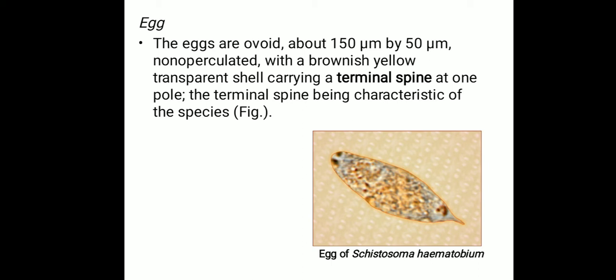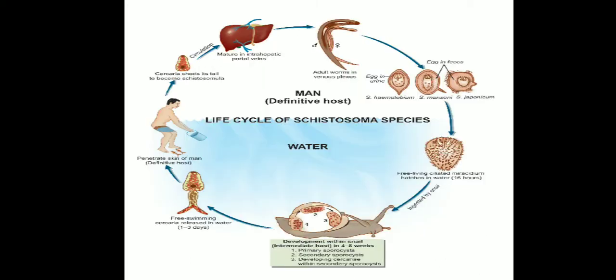The eggs pass into the lumen of the urinary bladder together with some extravasated blood and are discharged in the urine, particularly towards the end of micturition. For some unknown reasons, the eggs are passed in urine more during midday than at any other time of the day. Eggs laid in ectopic sites generally die and evoke local tissue reactions; they may be found in rectal biopsies but are seldom passed live in feces.